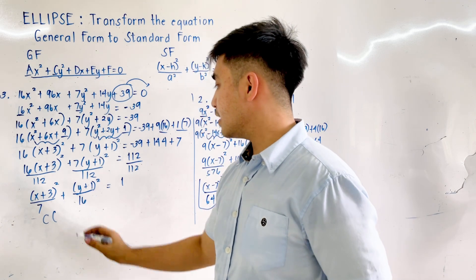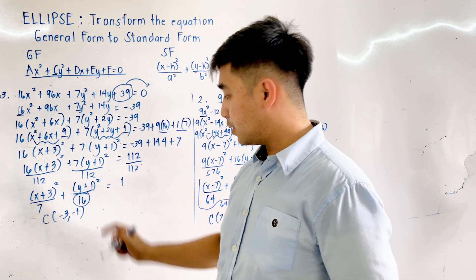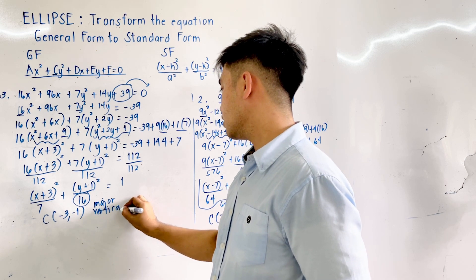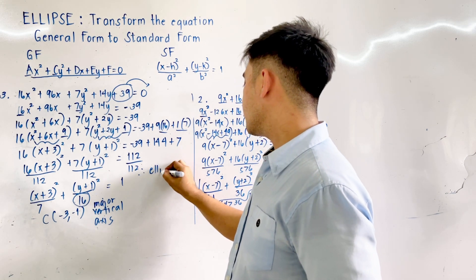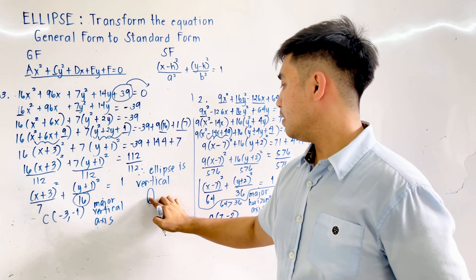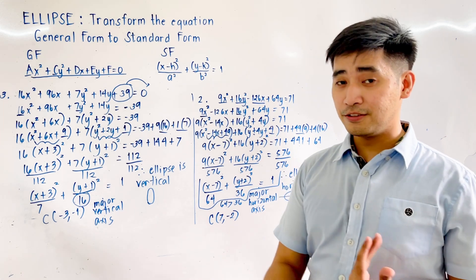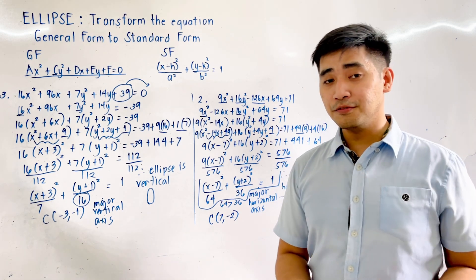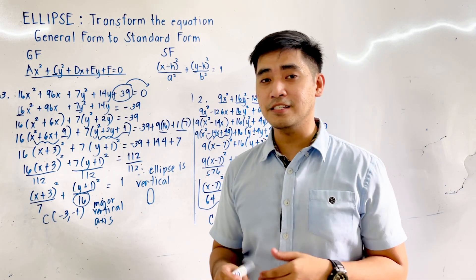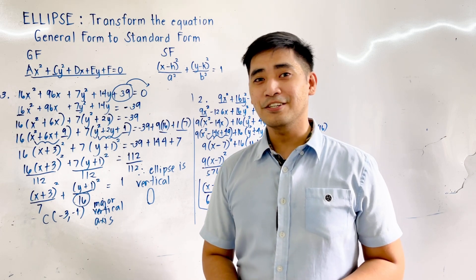The center is at (−3, −1). Since 16 is greater than 7 and 16 comes with y², this is a major vertical axis — the ellipse is vertical. To recap: the general form of an ellipse is ax² + cy² + dx + ey + f = 0, and its standard form is (x − h)² / a² + (y − k)² / b² = 1. If you have questions, comments, or suggestions, you may contact me on Facebook or YouTube. I am Engineer Jod Edwards-Jay Hernandez, saying mathematics is always fun. Goodbye and God bless.